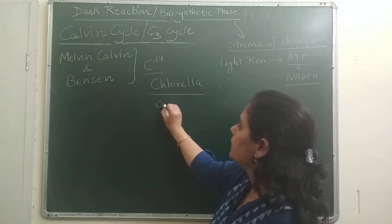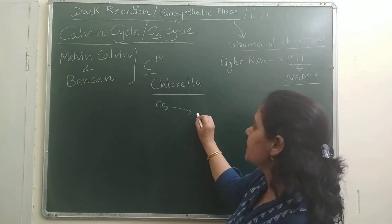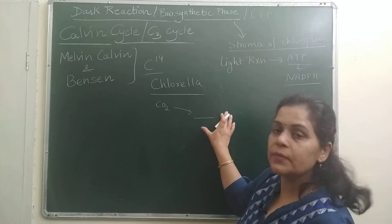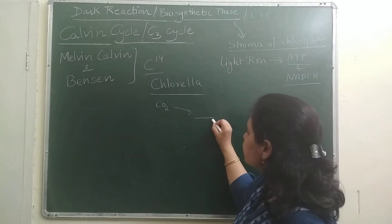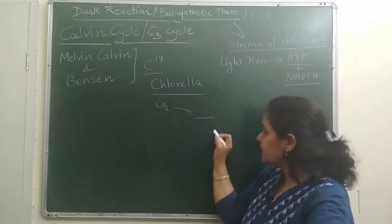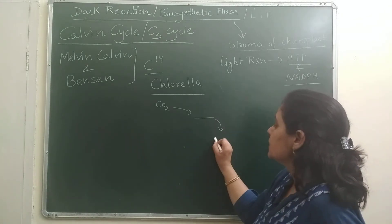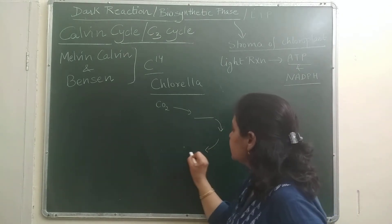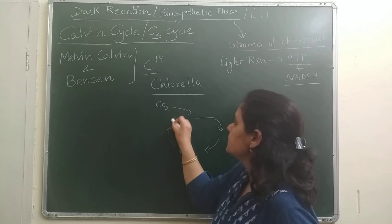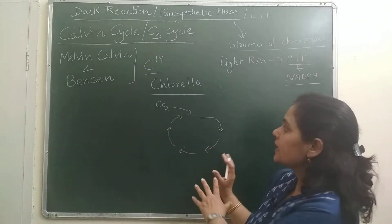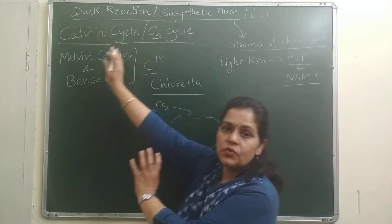So the C14 carbon, they used it to see in which product it was made. That is the first stable product where they have C14. And they got a cycle. And this cycle was known as Calvin cycle.